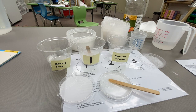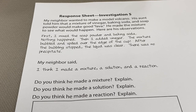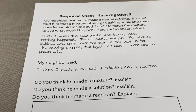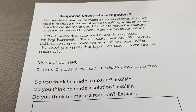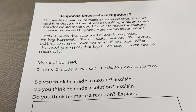Let's take a look at our response sheet for Investigation 5. My neighbor wanted to make a model volcano. His aunt told him that a mixture of vinegar, baking soda, and soap powder would make good lava. He made the mixture to see what would happen. His observations: first he mixed soap powder and baking soda — nothing happened. Then he added vinegar — the mixture bubbled and spilled over the edge. After the bubbling stopped, the liquid was clear with no precipitate. He said, 'I think I made a mixture, a solution, and a reaction.' Do you think he made a mixture? A solution? A reaction? Explain each.